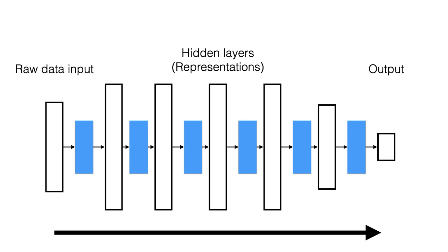All the stuff in the middle is a bunch of little neural networks. You pass the raw data input through the network, get some output, which gets passed into another neural network, and so on. These are all called hidden layers — they're hidden because we don't really care what values are in there; all we care about is the relationship between input and output.